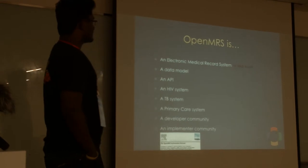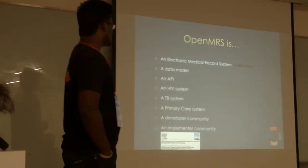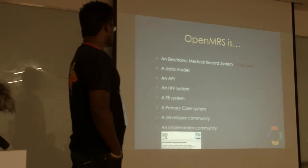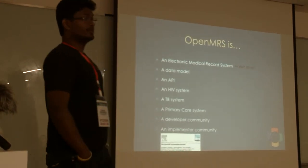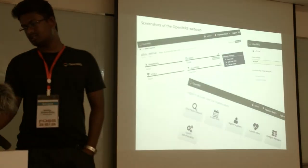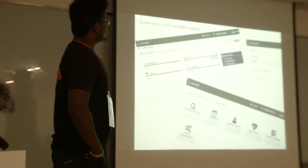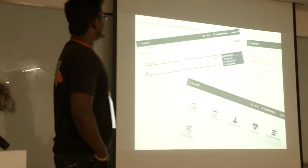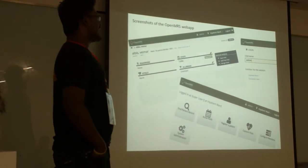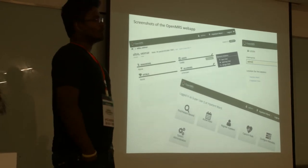OpenMRS is an electronic medical record system — a data model, an API, an HIV system, a primary care system, and it has a great developer community and implementer community as well. These are some screenshots of the OpenMRS application. We also have an Android application and an iOS application for mobile usage.